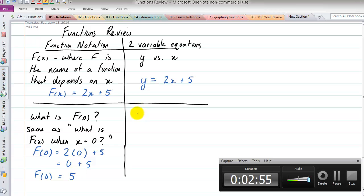Likewise, if we think about that in terms of two-variable equations, this is like saying what is y when x is 0? And I think people are probably more used to seeing that kind of idea. So that's like saying if y equals 2x plus 5 and we plug in 0 for x. So again, we can see it's very much the same thing, but just sort of different notation, different wording.